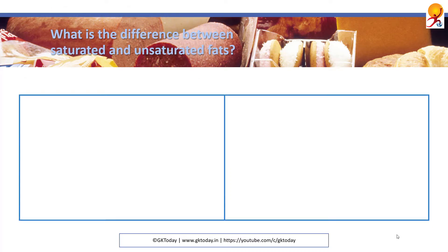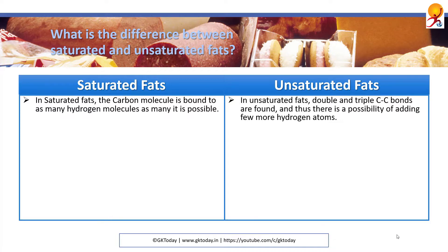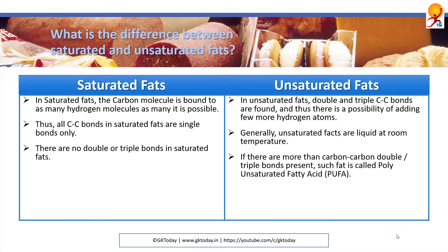What is the difference between saturated and unsaturated fats? In saturated fats, the carbon molecule is bound to as many hydrogen molecules as possible. In unsaturated fats, double and triple carbon-to-carbon bonds are found, and thus there is a possibility of adding more hydrogen atoms. All carbon-to-carbon bonds in saturated fats are single bonds, whereas unsaturated fats are liquid at room temperature and saturated fats are usually solids. In unsaturated fats, if there are more than one carbon-carbon double or triple bonds present, such fat is called a polyunsaturated fatty acid or PUFA.